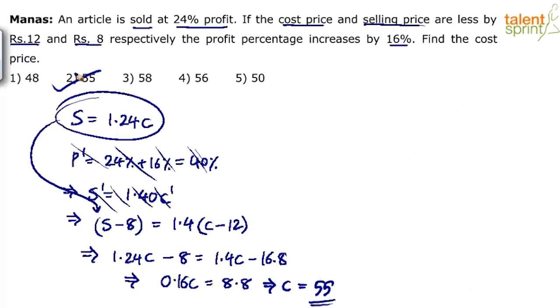So I thought it was a simple question. Just two equations. S equals to 1.24C. S minus 8 equals to 1.4C minus 12. Two equations, two unknowns we can solve.